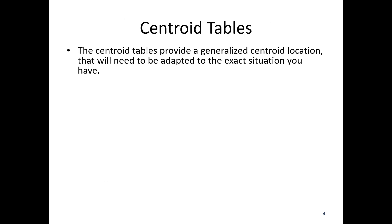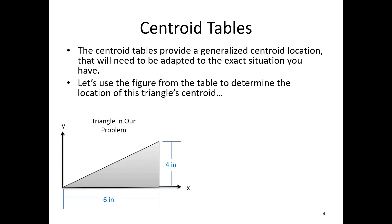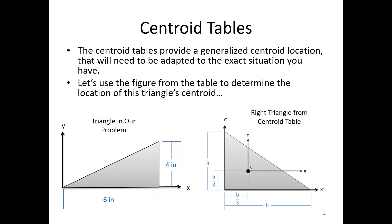The centroid tables provide a generalized centroid location for a number of common parts, and they are going to need to be adapted to the exact situation you have. Let's use the figure from the table to determine the location of our triangle centroid. Say we've got this triangle — exactly six inches wide and four inches tall. In the centroid table from Mechanics of Materials, it uses general width B and general height H.